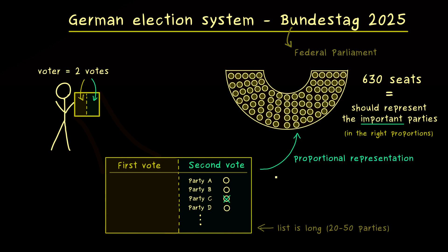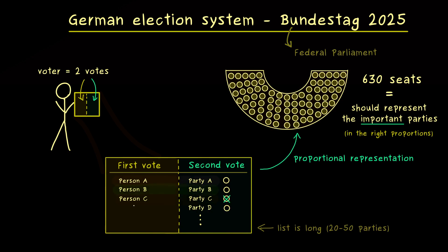This would already work as a voting system, but now comes in the next layer because we also want to vote for people. This is where the first vote comes in. Usually such a person is associated to a party — you can see this connection immediately because the person and the party are on the same line, and the person also gets the party next to their name. However, it is also allowed to be a candidate without a party, and then you are just at the bottom of the list with all the independent candidates.